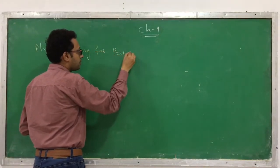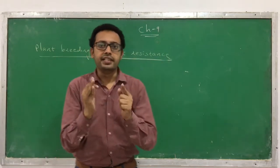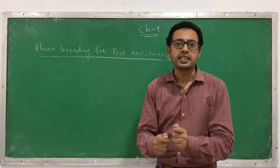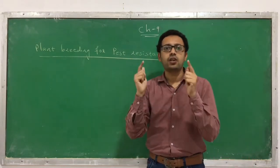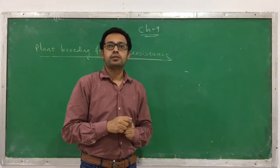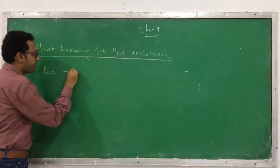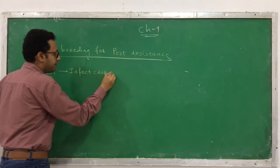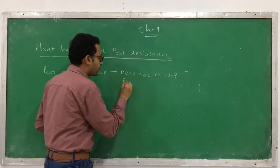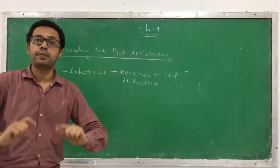Today we will learn plant breeding for insect and pest resistance. Just like diseases affect the crop and decrease its production, pests and insects also infect the crop and decrease the production of a crop. When there is a decrease in crop production, the entire population is adversely affected. Hence we have to generate pest resistance plants.